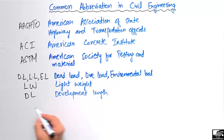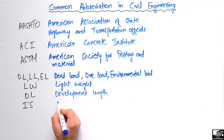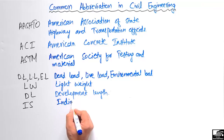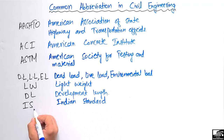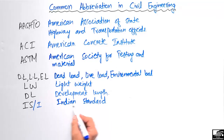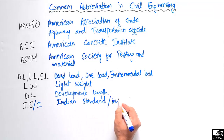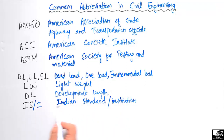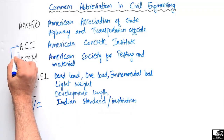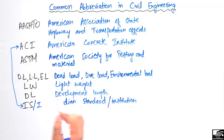The next one is IS, which is most commonly used in Indian standards. IS represents Indian Standard, and ISI represents Indian Standard Institution. The IS provides different codes for the design of structural members, similar to ACI, but the Indian standards provide codes according to their own regional requirements in Asia.